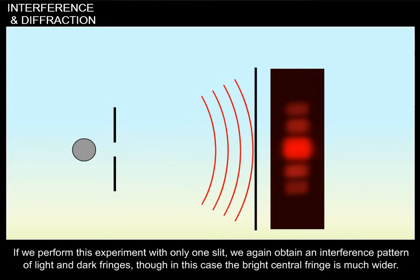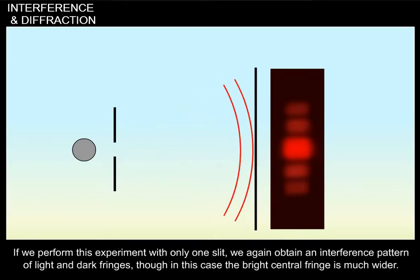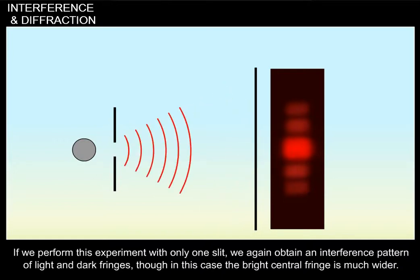If we perform this experiment with only one slit, we again obtain an interference pattern of light and dark fringes, though in this case, the bright central fringe is much wider.